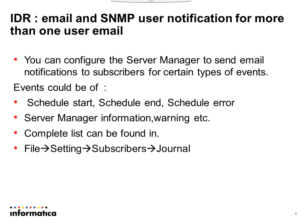The complete list can be found by navigating: click on File, then click on Settings, then go to the Subscribers sub-tab, then click on the Journal sub-tab, and you will see the complete list of events that can be selected for alert email notification.